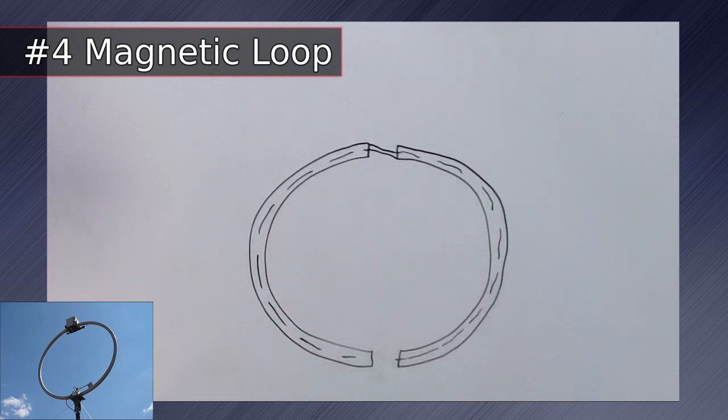Loop antennas have strong nulls on the sides, making it directional, which can be beneficial to null out interfering stations. Because of this, the loop antenna is a popular choice in direction finding.